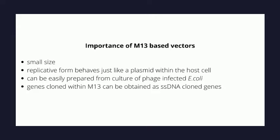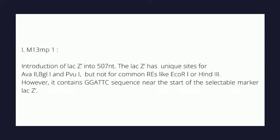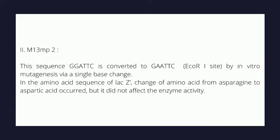In the first M13-based cloning vector, M13 mp1, introduction of the lacZ gene into the 507-nucleotide region is done. The lacZ gene has unique sites for various enzymes, but not for common ones like EcoRI or HindIII. However, it contains the sequence GGATTC near the start of the selectable marker lacZ. In mp2, this sequence GGATTC is converted to GAATTC — the EcoRI site — by in vitro mutagenesis via a single nucleotide change, causing an amino acid change from asparagine to aspartic acid, but without affecting enzyme activity.